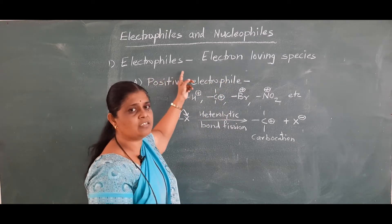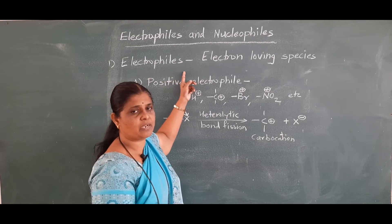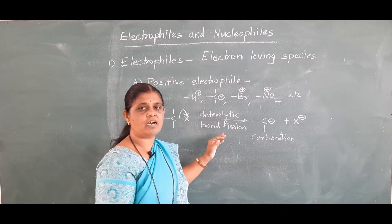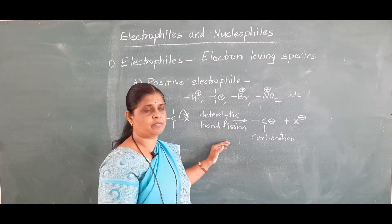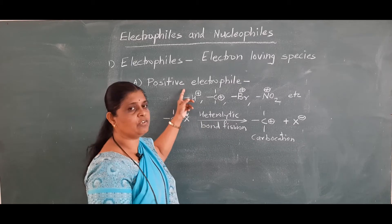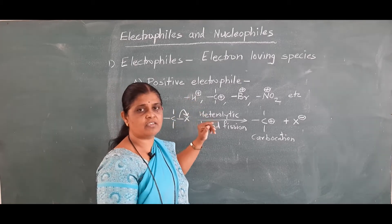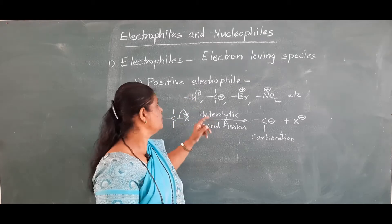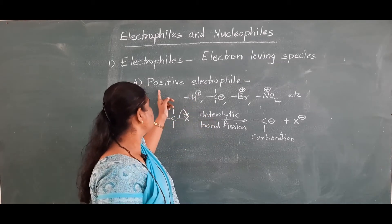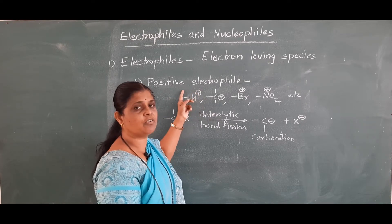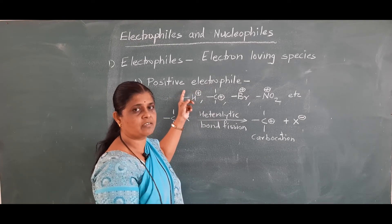Therefore, they are known as electrophiles. Electrophiles are of two types: one is positive electrophile and another is neutral electrophile. First we see what are positive electrophiles.